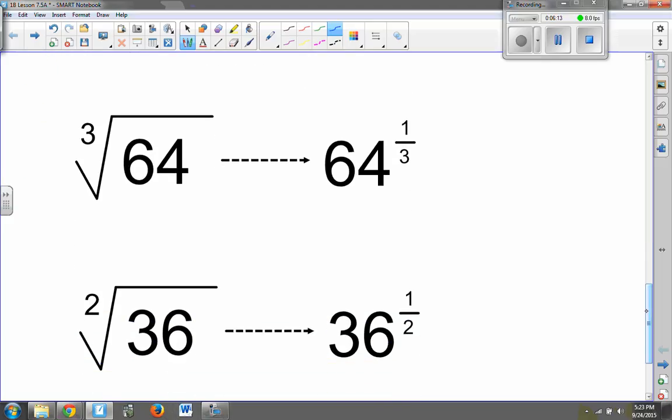Part C says the third root of 64, that's the same as 64 to the one-third power. And then part D says the square root of 36, the second root, which we know is the same as 36 to the one-half power.